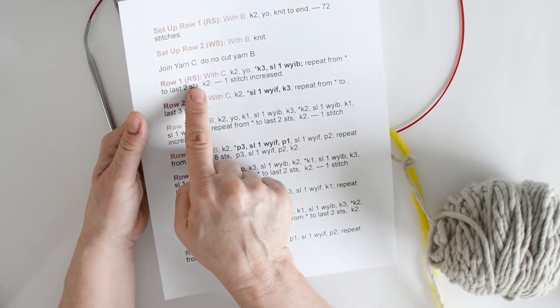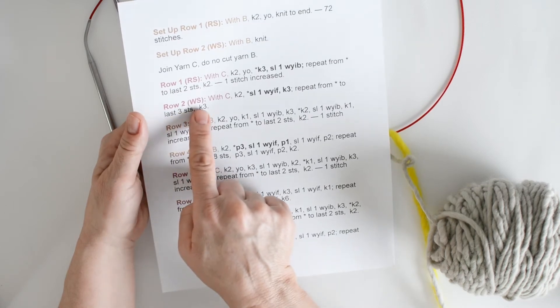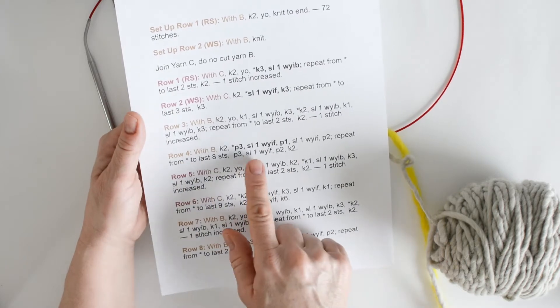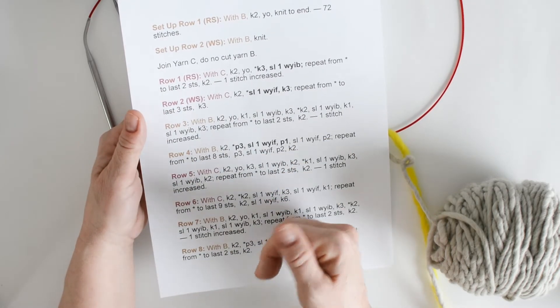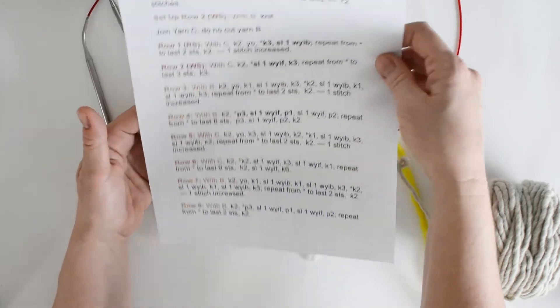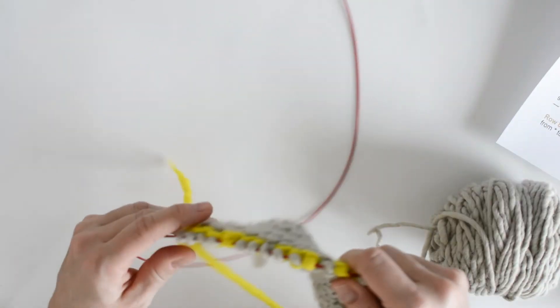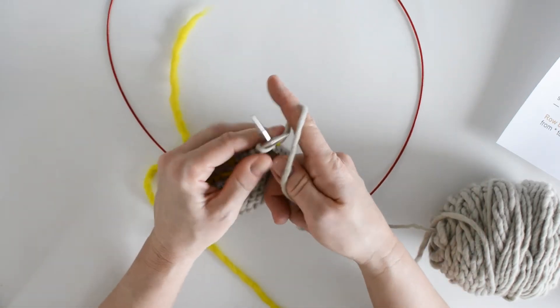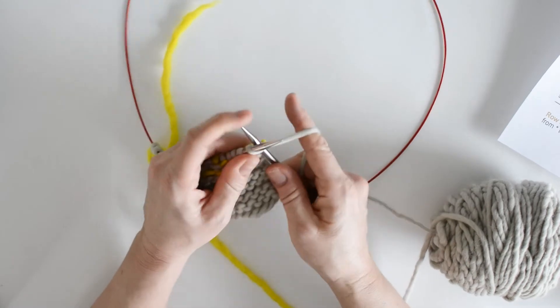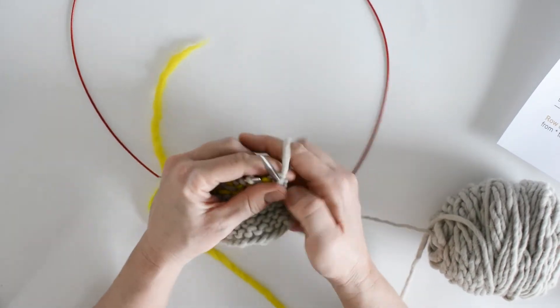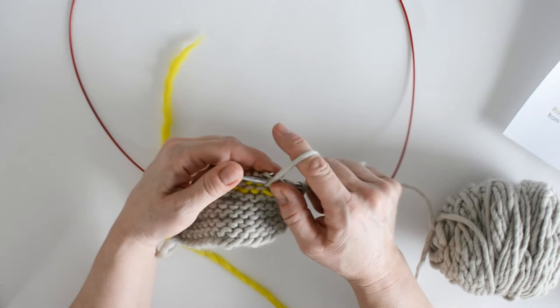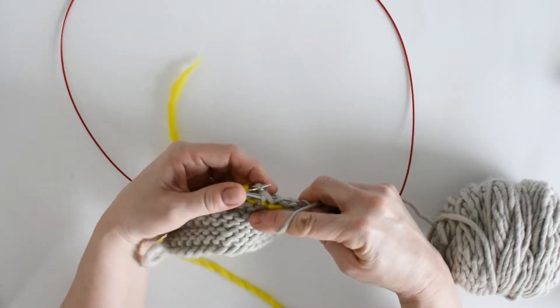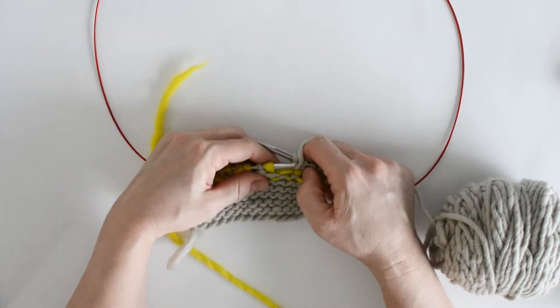All of our odd numbered rows will be right side. All of our even number rows will be wrong side. So we're on row 4, that means we're on a wrong side row. Slip 1 with yarn in front, we're going to slip that yarn on the side that's facing us. So let's go ahead and try that. So, pattern tells us, knit 2, purl 3. Now, it's time to slip 1 with the yarn in front.